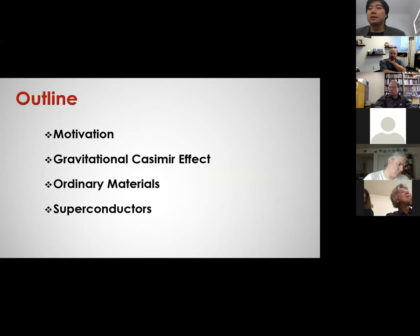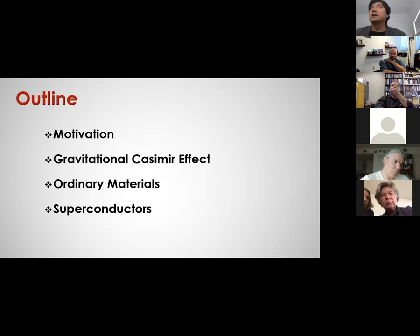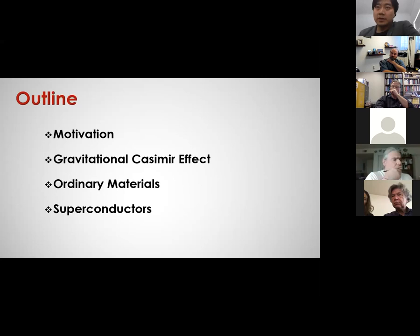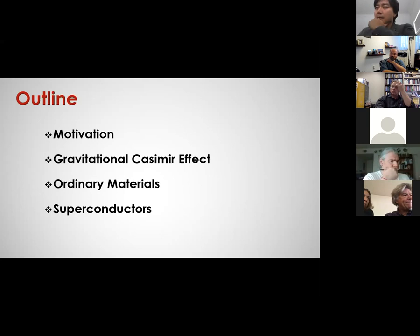I'll discuss motivations for doing exactly this in the next section. I will then show how to derive the general formula for the gravitational Casimir energy for real bodies — this derivation will be the main result of this talk. I'll then apply this formula to calculate the gravitational Casimir pressure for ordinary materials, and consider what happens when you use superconductors. I also want to derive the non-relativistic generalized Dirac Hamiltonian in a gravitational wave background, and the reason for this will be made clear during the talk.